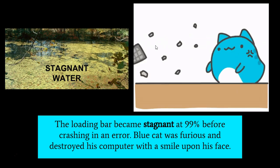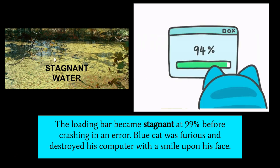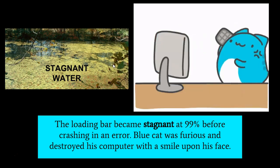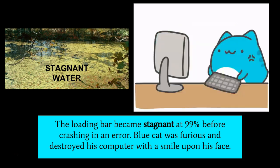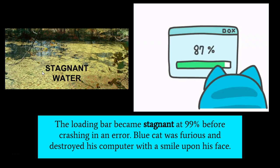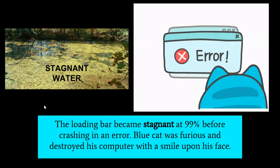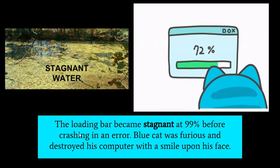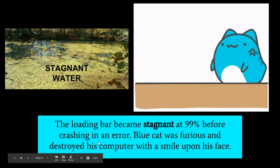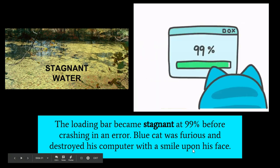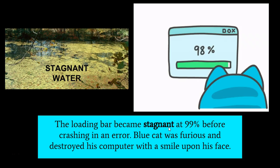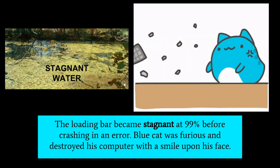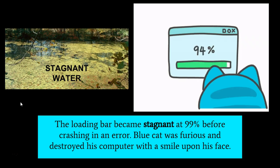Next word: stagnant — not moving. Often times stagnant is used with stagnant water, which is water you don't want to drink from because it's filled with bacteria. In a different use: the loading bar became stagnant at 99% before crashing in an error — Blue Cat was furious and destroyed his computer with a smile upon his face. This adjective is very versatile and can be used for computers, slow water, and other situations.